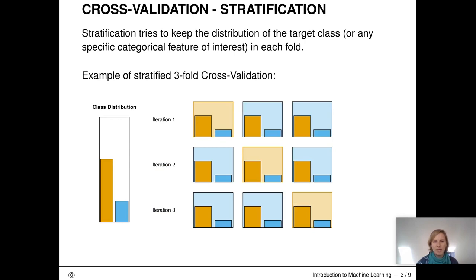If there is an imbalanced class distribution, one may want to do a variant of cross-validation. Stratification in cross-validation tries to keep the distribution of the target class in each fold. So in this example here, the proportion of orange and blue class are always the same in each fold. There are some other variations to cross-validation, which you need if you have, for example, groups such as different hospitals or countries. Also, repeated cross-validation has proven as a useful strategy to even further reduce the variability issues. So repeated cross-validation means that we do cross-validation several times, for example five times three-fold cross-validation.